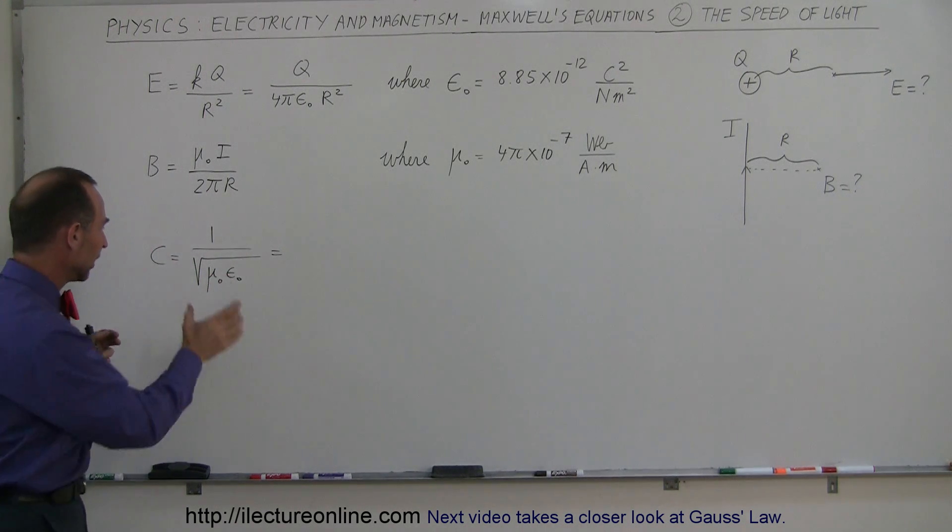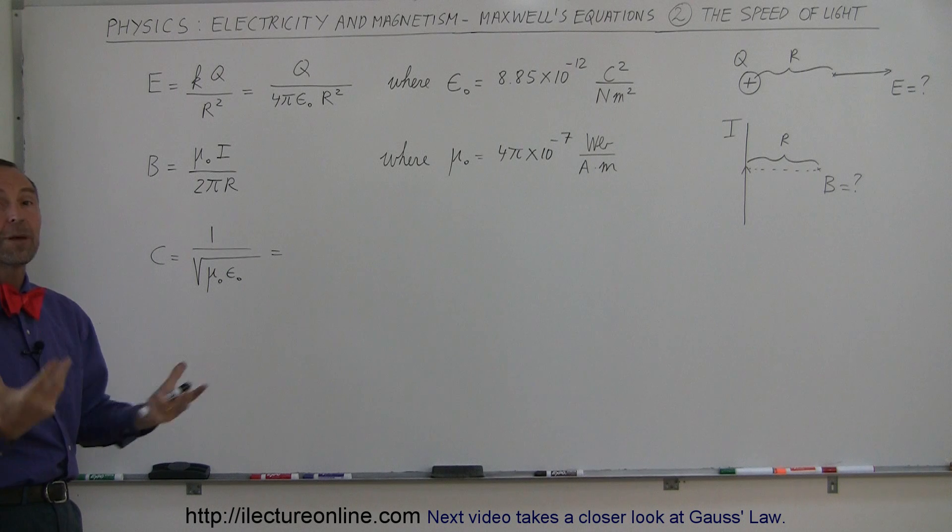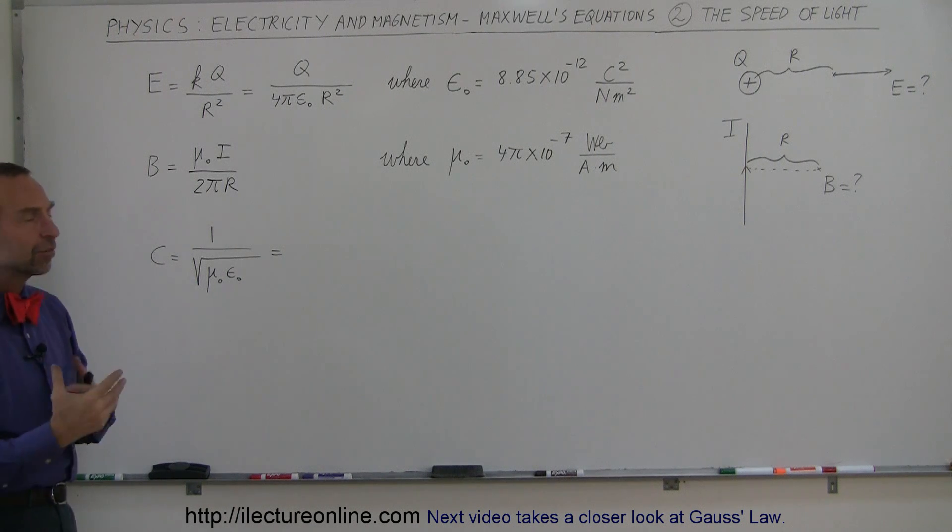The speed at which light moves through the universe is determined by these two constants that control. These are constants related to whatever fabric of space does, to electric fields and magnetic fields.